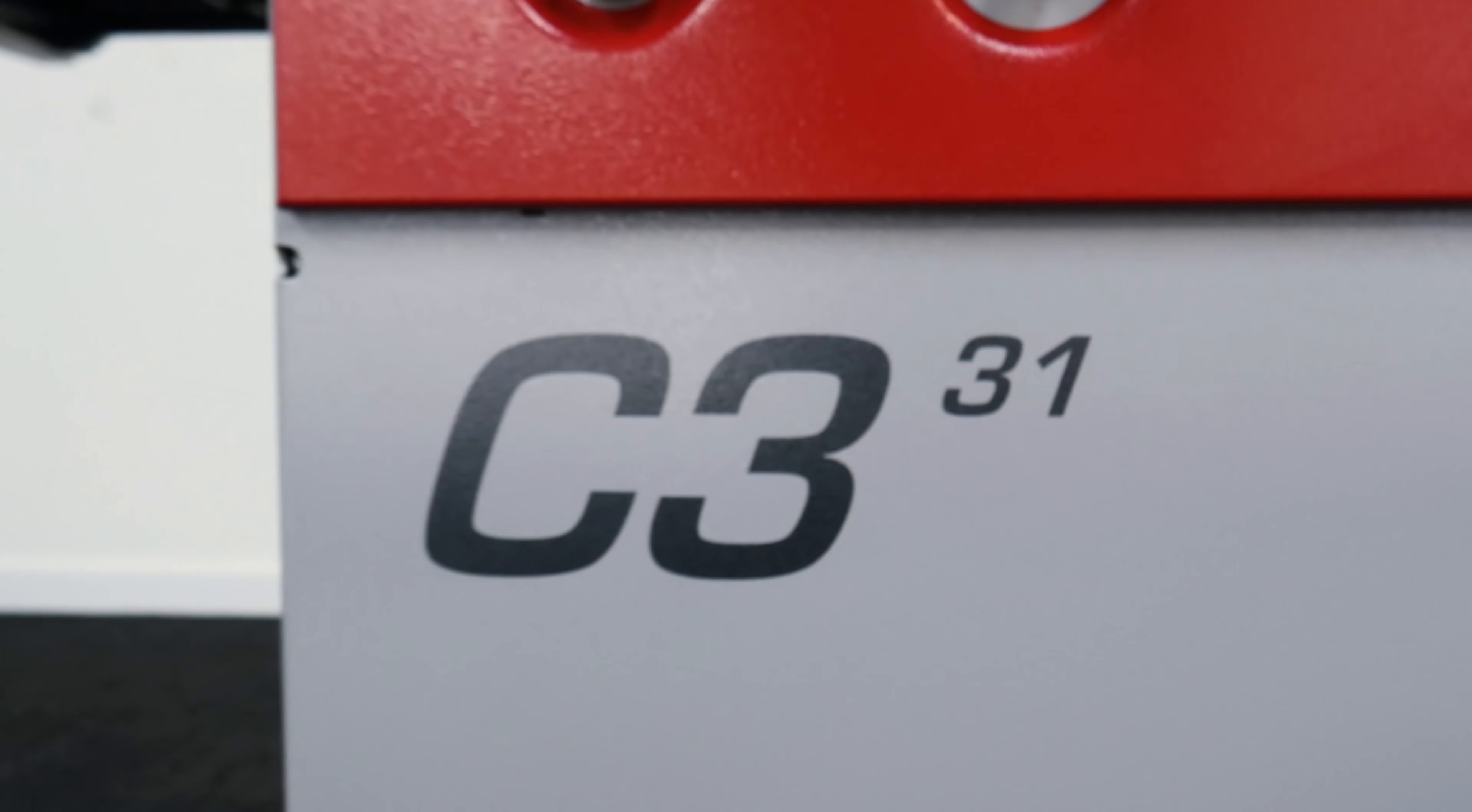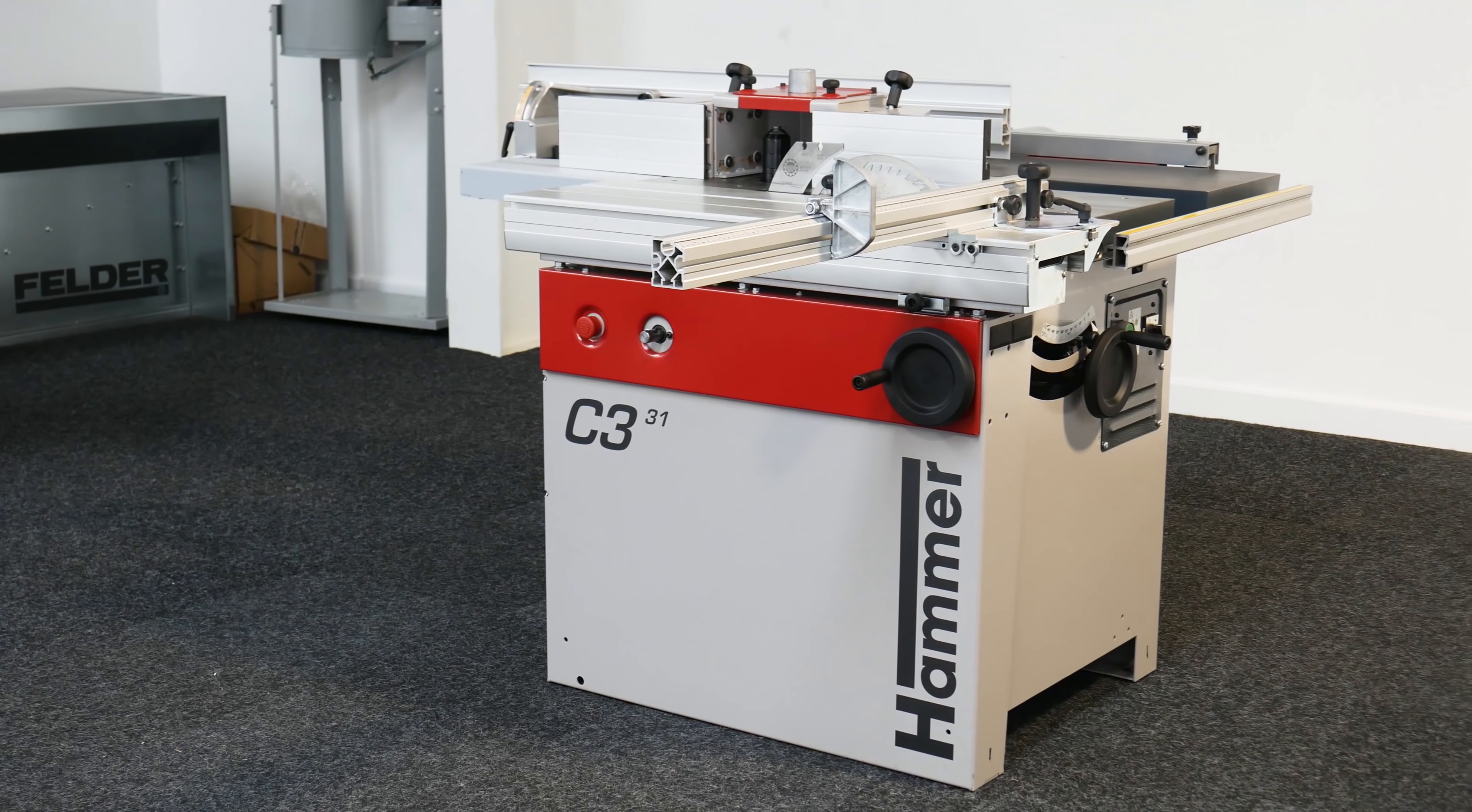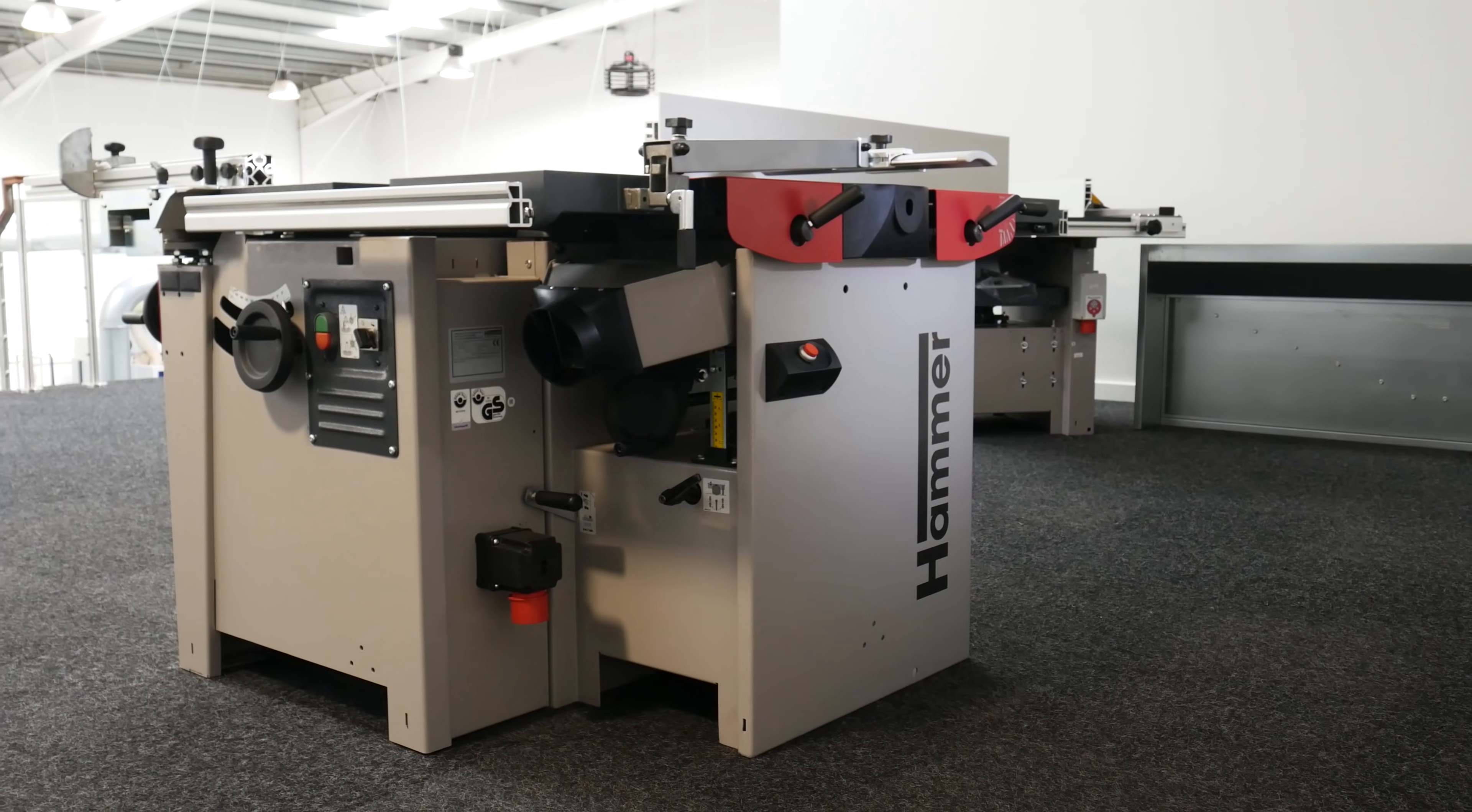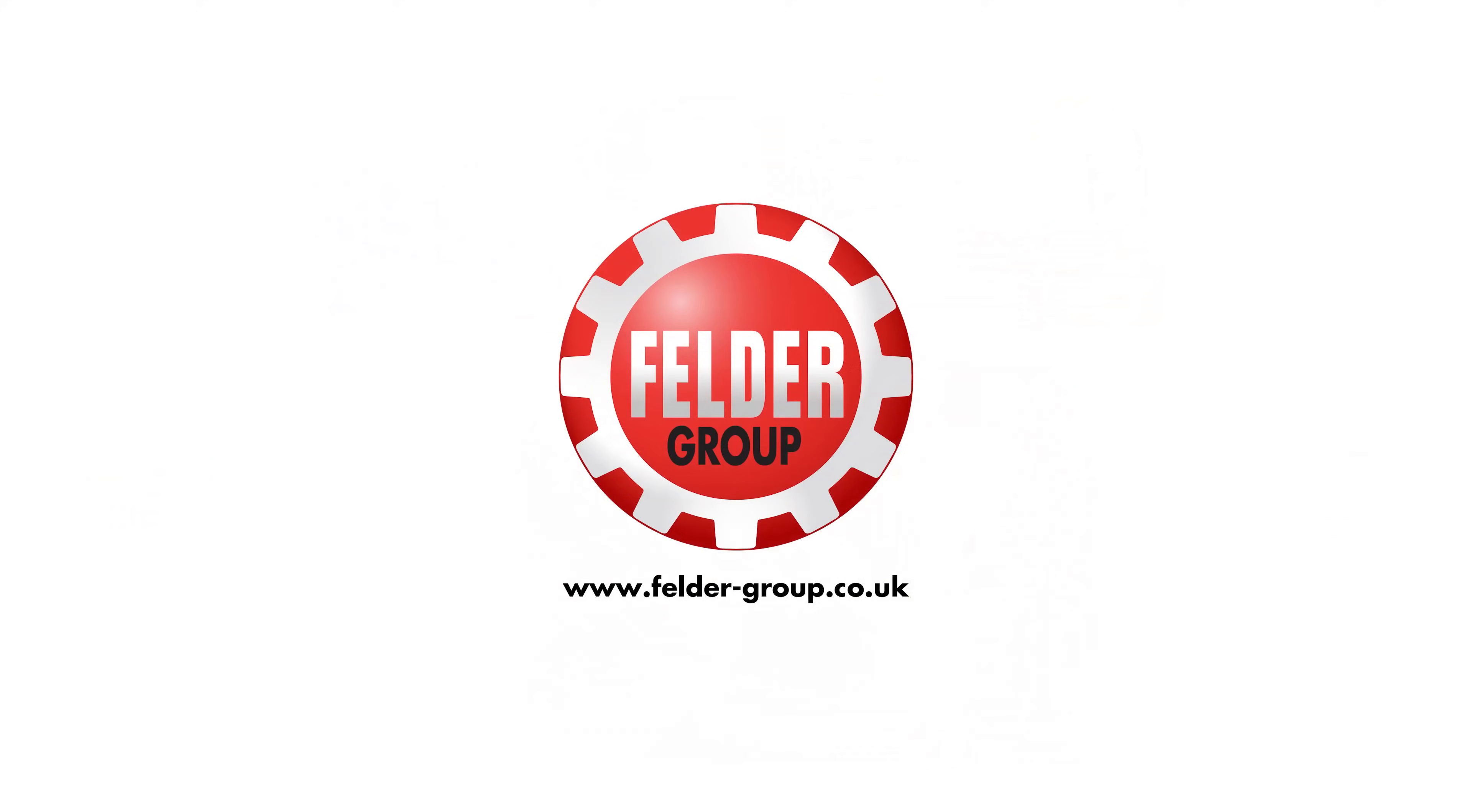If space is an issue, the Hammer C331 could be the solution you've been looking for. This compact yet powerful combination machine packs professional performance and versatility into the smallest of footprints, with all the outstanding quality you'd expect from the Felder Group. To find out more about how the Hammer C331 could revolutionize your workshop, visit felder-group.co.uk